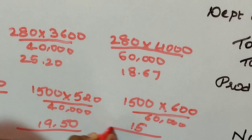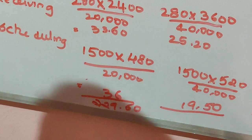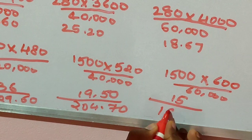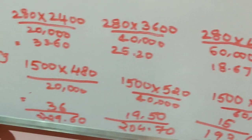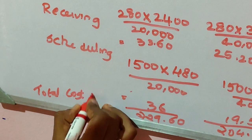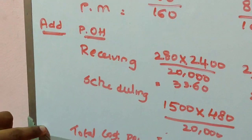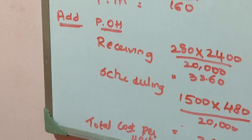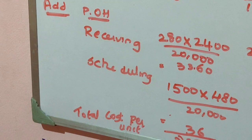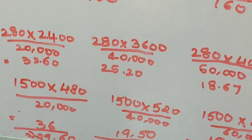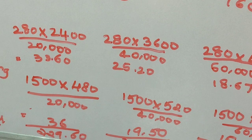Totaling all the costs, the total cost per unit under ABC is: ₹229.60 for product X, ₹204.70 for product Y, and ₹193.67 for product Z. When you compare the ABC cost with that of the traditional cost, the product which costed high under traditional costing costs lower under ABC costing. If traditional costing is used, it generally results in a loss to the entrepreneur. This concludes the first solution.